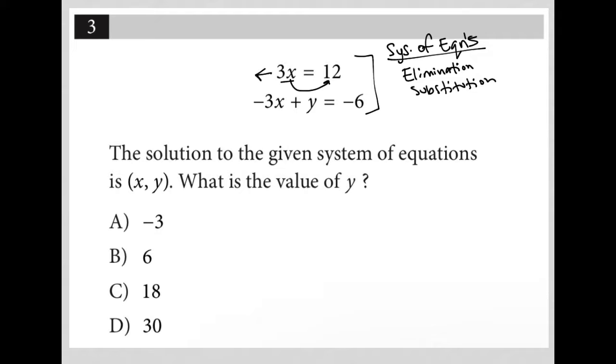I could solve for x here pretty easily by dividing both sides by 3. I get x equals 4. And then knowing that x is 4, this becomes negative 12 plus y equals negative 6, which would mean that y equals positive 6 once I add 12 to both sides.